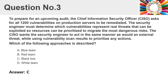Question 3: To prepare for an upcoming audit, the Chief Information Security Officer asks for all 1,200 vulnerabilities on production servers to be remediated. The security engineer must determine which vulnerabilities represent real threats that can be exploited so resources can be prioritized to mitigate the most dangerous risks. The CISO wants the security engineer to act in the same manner as an external threat, while using vulnerability scan results to prioritize any actions. Which of the following approaches is described?